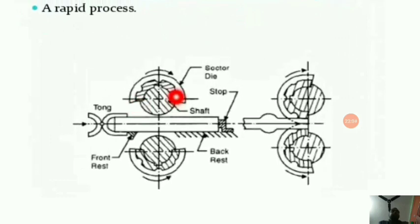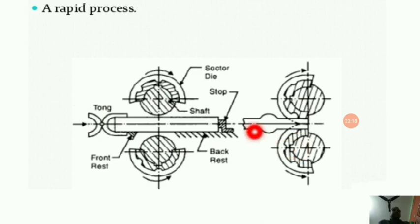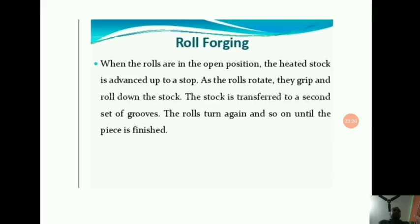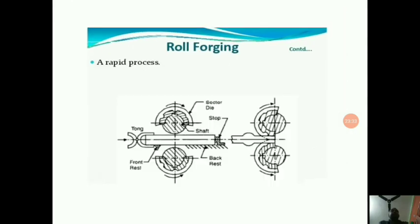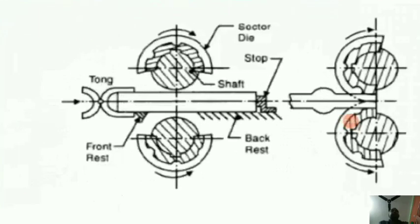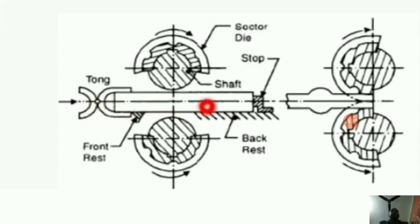In roll forging, when the rolls are in the open position the heated stock is advanced to the rolls; as the rolls rotate they grip and roll down the stock. The stock is transferred to a second set of grooves, the rolls turn again, and so on until the piece is finished. This is a very rapid process. A heated metal bar is pushed up to a stop, and the rotating dies are employed to give it a shape.